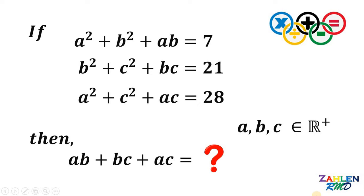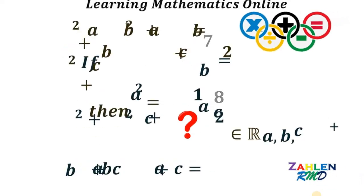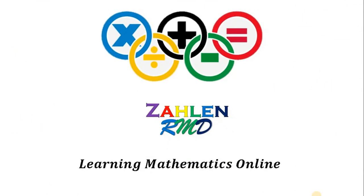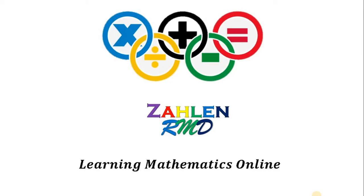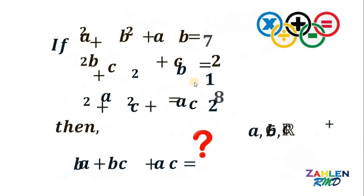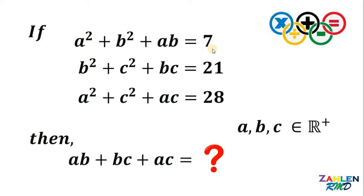Good day everyone, here's our math challenge for today. Here's our question: if a squared plus b squared plus ab equals 7, b squared plus c squared plus bc equals 21, and a squared plus c squared plus ac equals 28, then what is the value of ab plus bc plus ac?